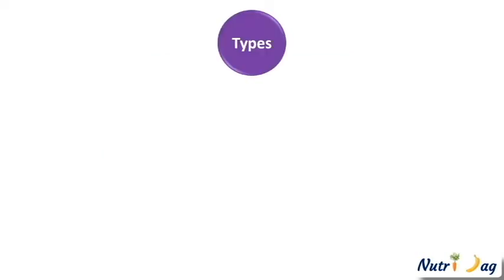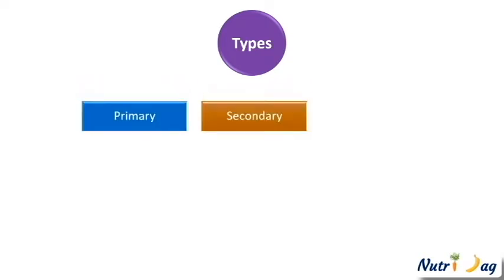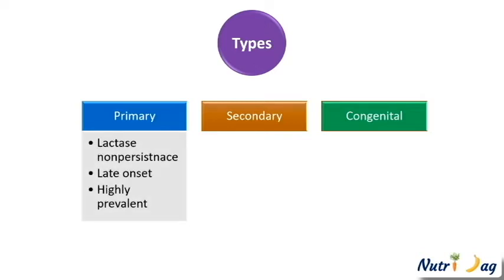There are three types of lactose deficiency: primary lactose intolerance, secondary lactose deficiency, and congenital lactose deficiency. In primary lactose intolerance, lactase production falls off sharply — this usually happens in adulthood, and the majority of cases of lactose intolerance belong to this category.